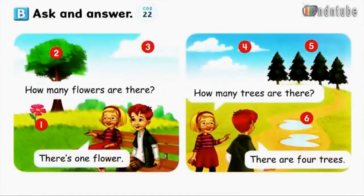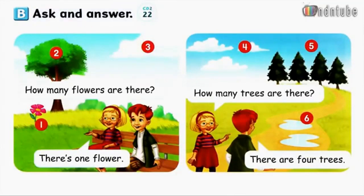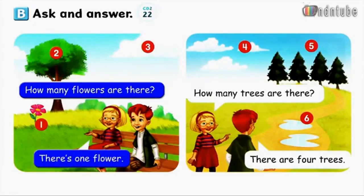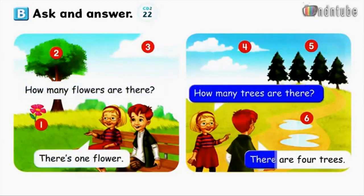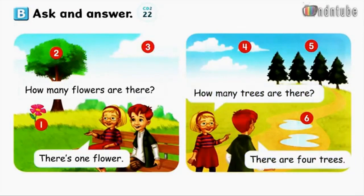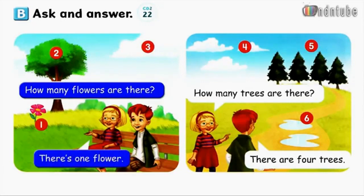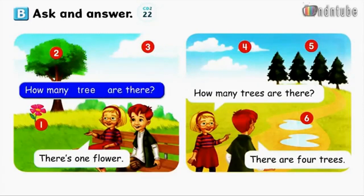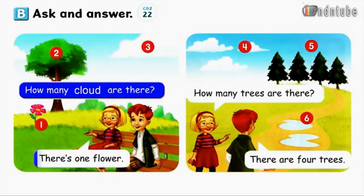Page 50. B. Ask and answer. How many flowers are there? There's one flower. How many trees are there? There are four trees. Number 1: How many flowers are there? There's one flower. Number 2: How many trees are there? There's one tree. Number 3: How many clouds are there? There's one cloud.